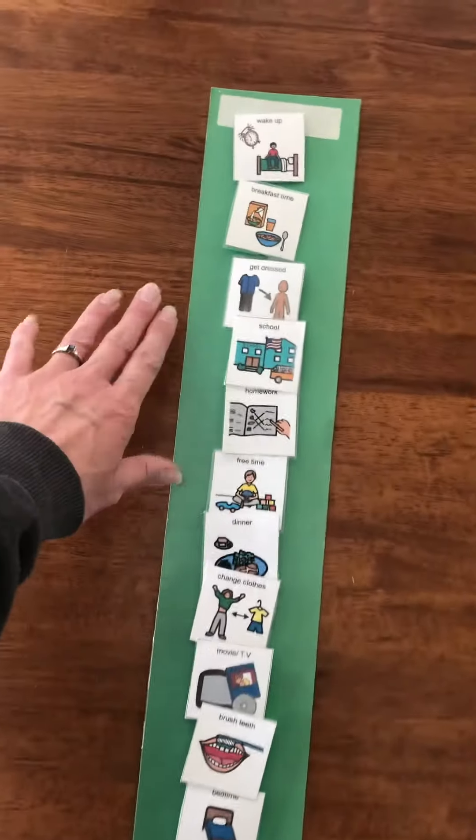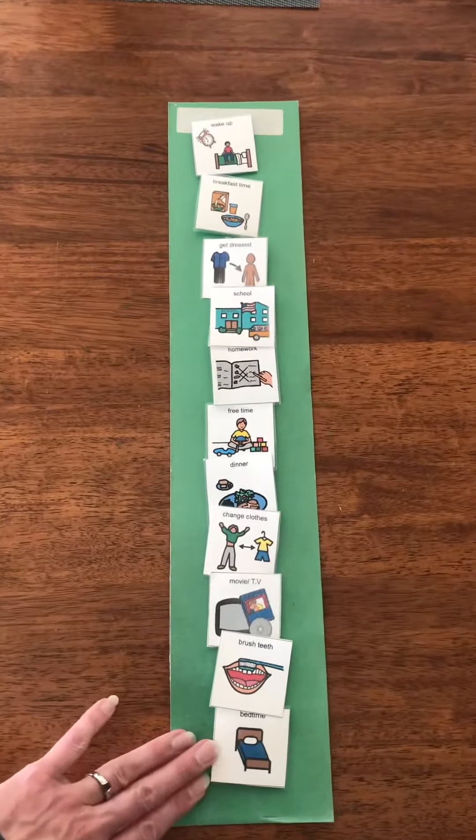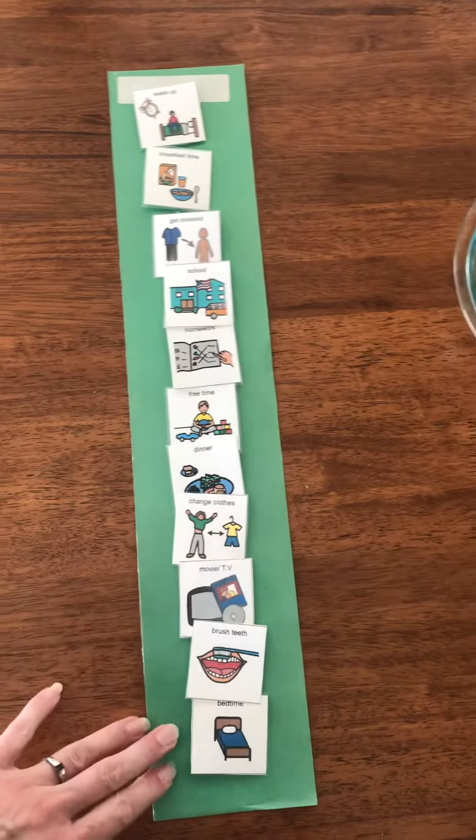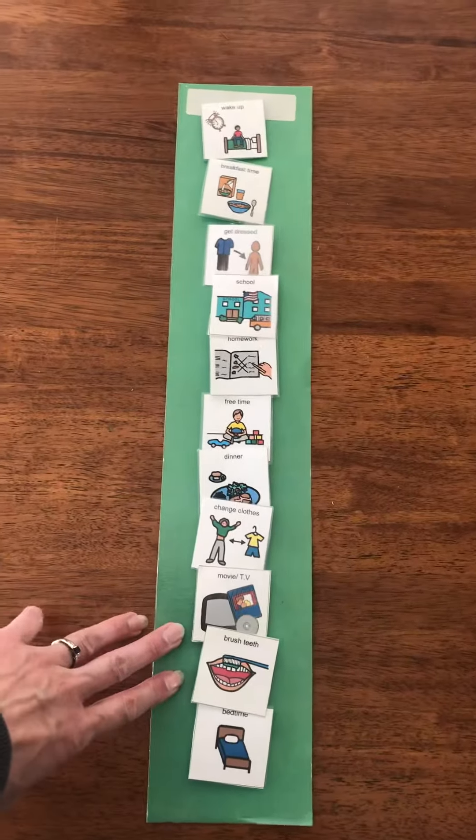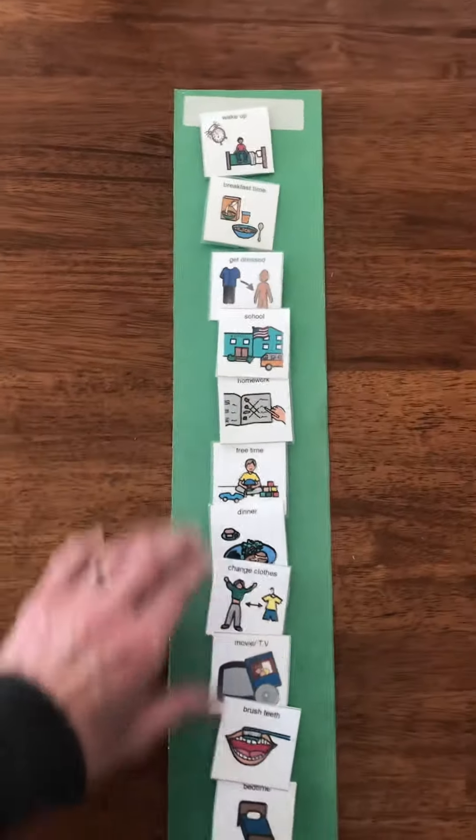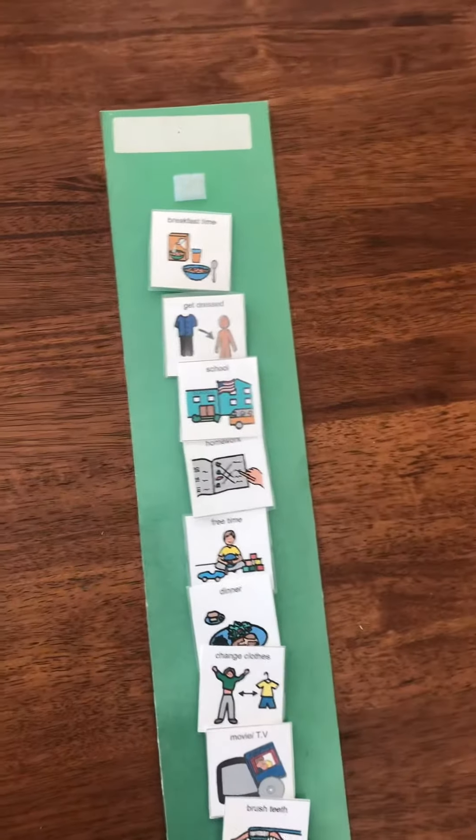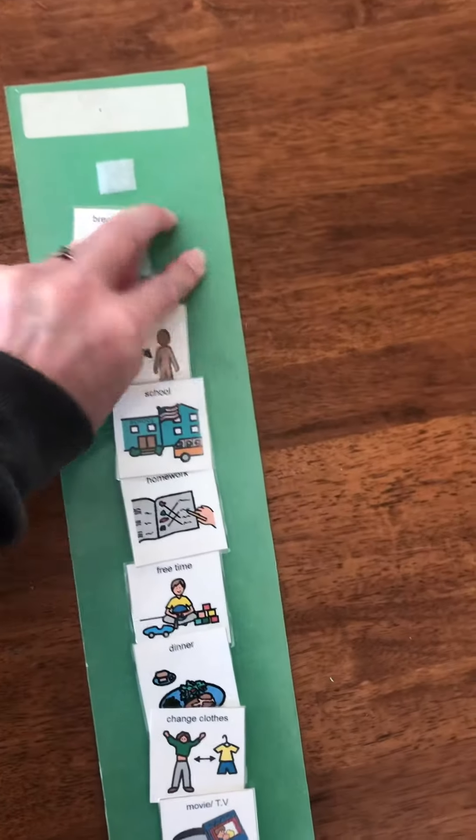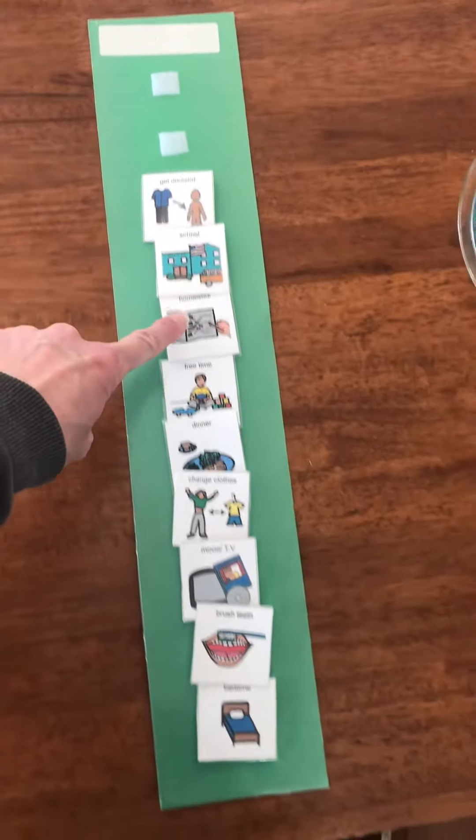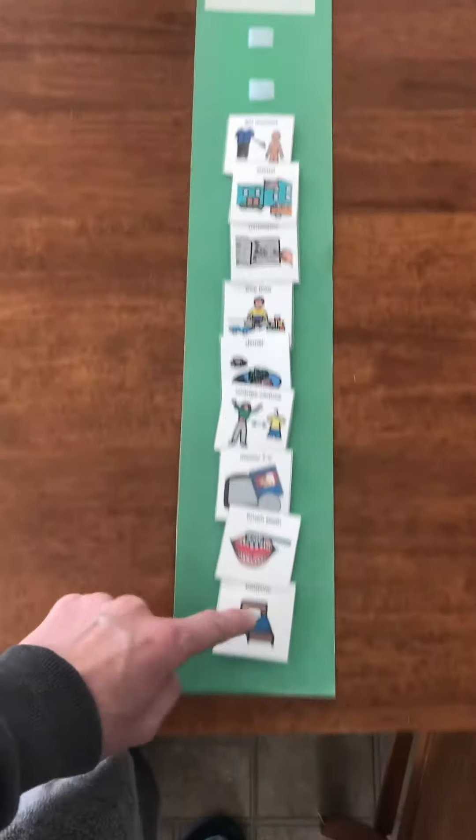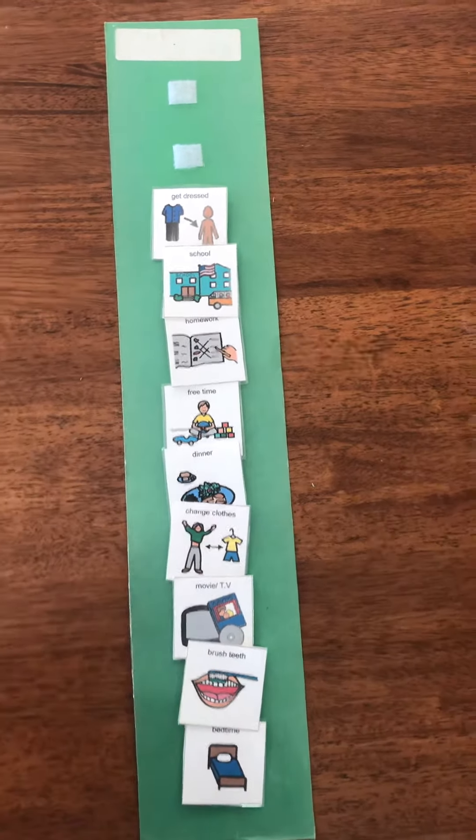So this is an example of a visual schedule. This is very similar to one that we use at school where students can pull them off and it is done with Boardmaker. If you have access to a program like this, this is a great way to make a visual schedule for your kids at home. You can see when kids are done with the activity that's on their schedule, they just pull it off and they know that they are finished with that activity for the day. But they get to look and see what else is on their schedule. This helps with that predictability piece and helps also with transitioning from one thing to the next.